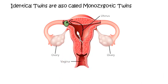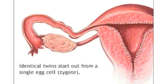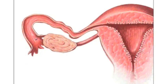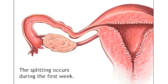First, the ovary releases an egg cell that comes to the fallopian tube. After coming to the fallopian tube, the egg cell is fertilized by a sperm cell and a zygote is produced. After that, the zygote divides into two blastocyst cells. Only then can the splitting occur and that can produce twins — none other than that.